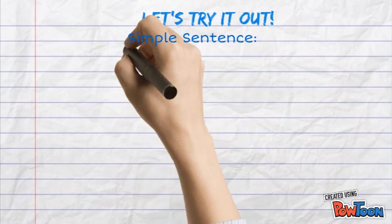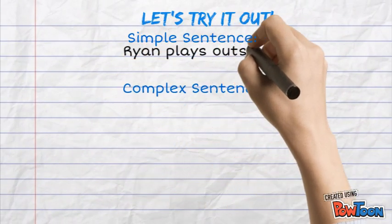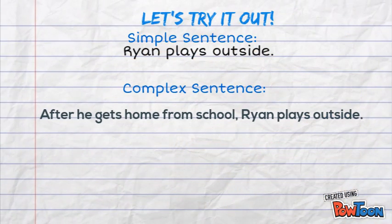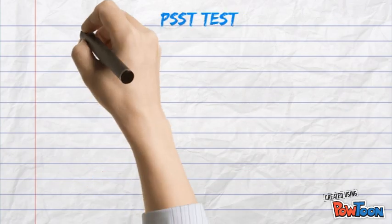Here's the complex sentence using the first AAAWWUBBIS format: 'After he gets home from school, comma, Ryan plays outside.' On the next slide, I'll show you a really cool trick — the test — to make sure your complex sentence has everything it needs.